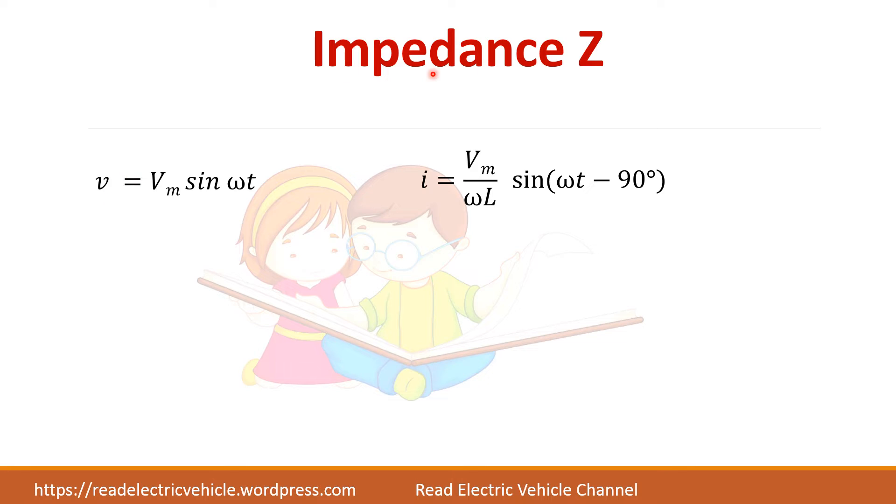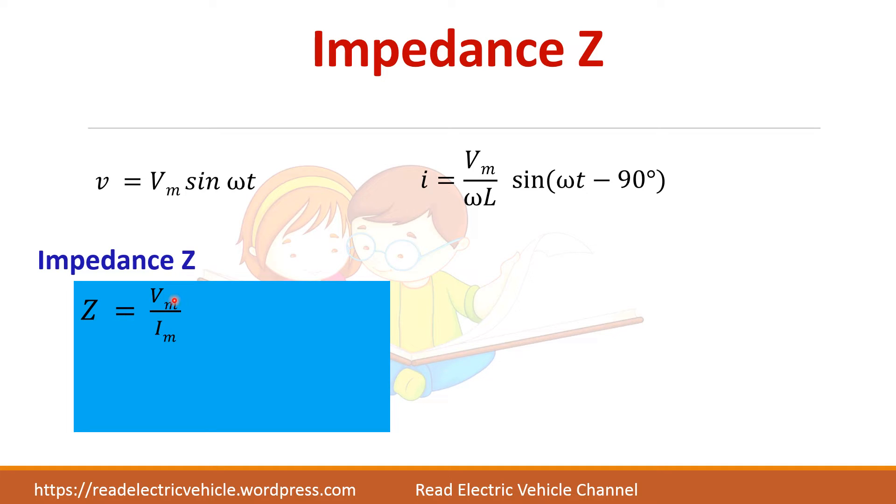So first let us find the impedance. V and I are here. So impedance is equal to Vm/Im, Vm divided by this one, that is equal to Lω. So this impedance in a pure inductive circuit is equal to Lω. This Lω I can represent as XL where XL is called the inductive reactance.